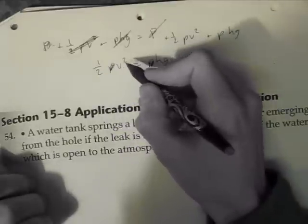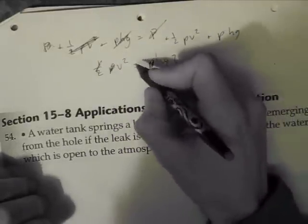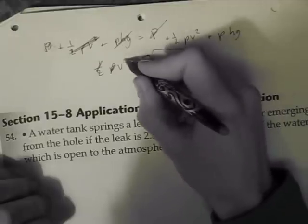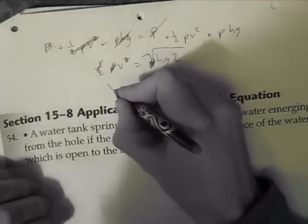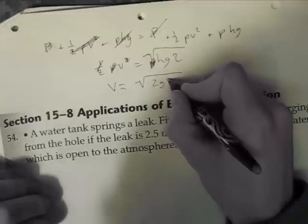So to get rid of this one half, to get velocity by itself, we're going to times this part by 2 and we're going to square root it, getting kind of messy here, but we're going to square root it. So basically it comes down to v = √(2gh).